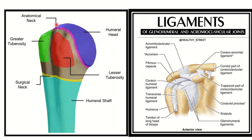In the first picture we can see the humerus and its different parts. Here is the humeral head, and just below it there is a narrow line — this is the anatomical neck. Then we have the greater tuberosity, lesser tuberosity, and further below the surgical neck and humeral shaft.